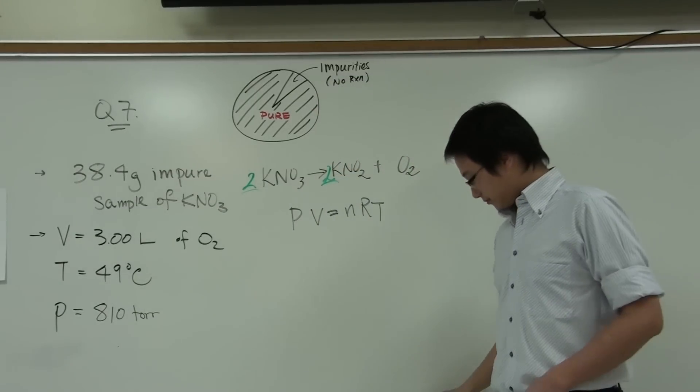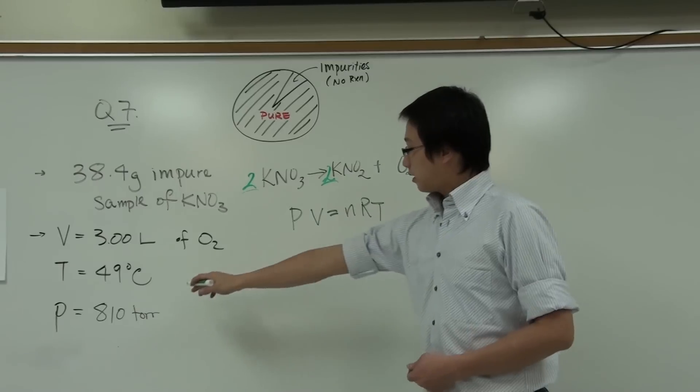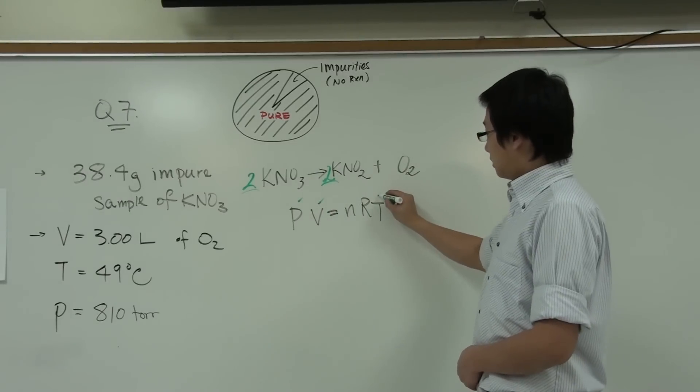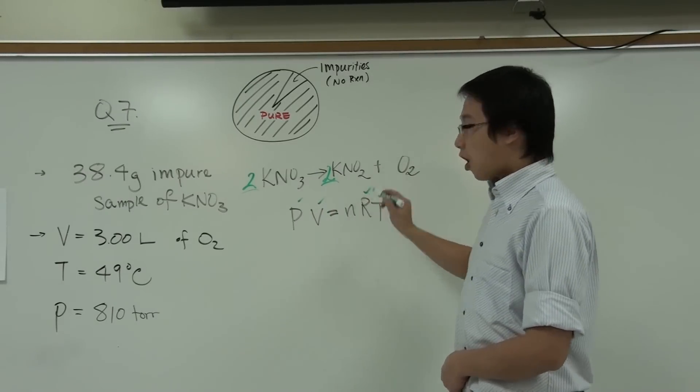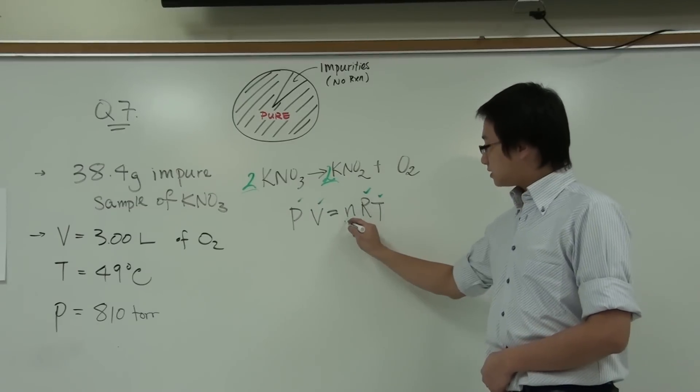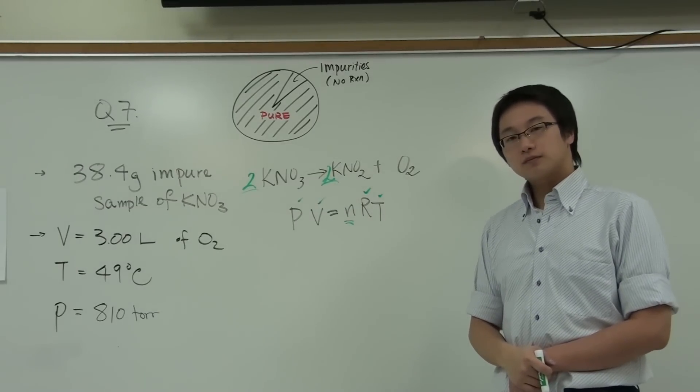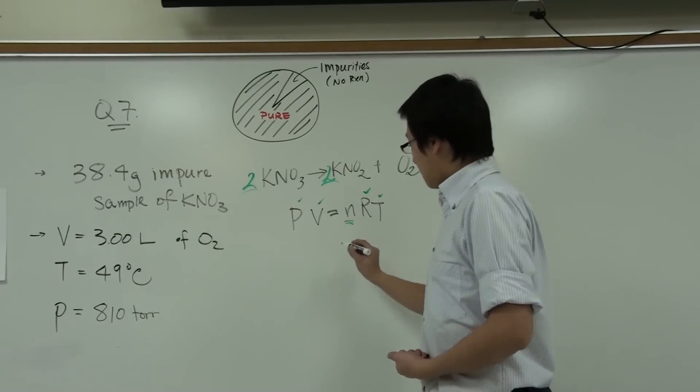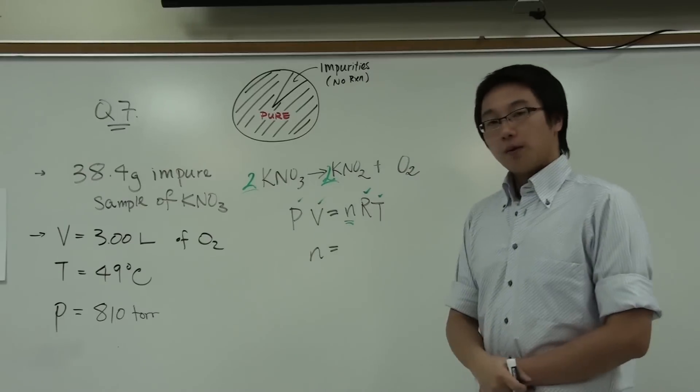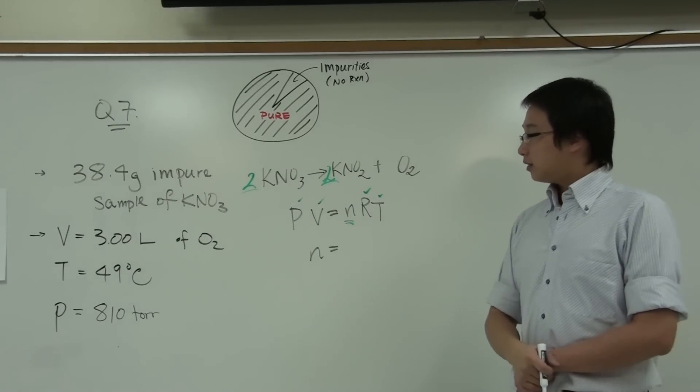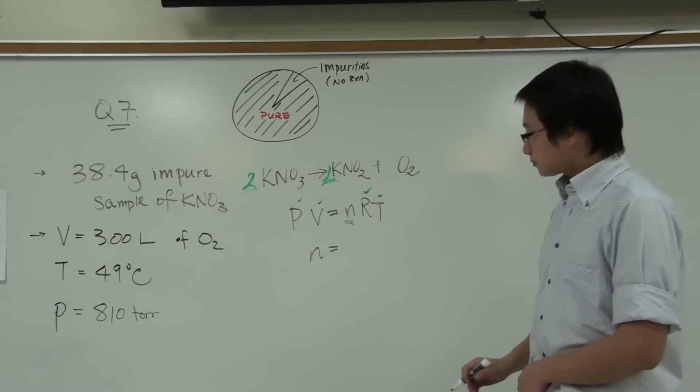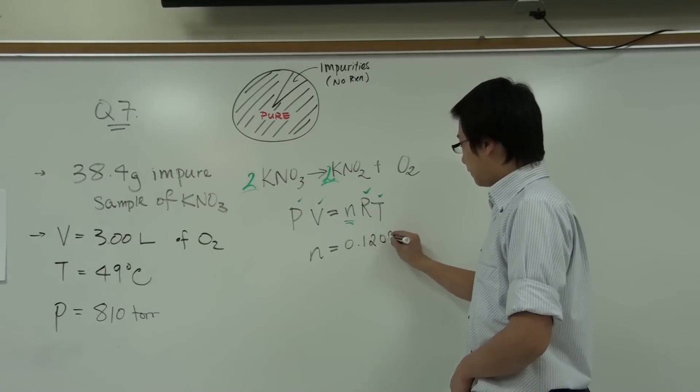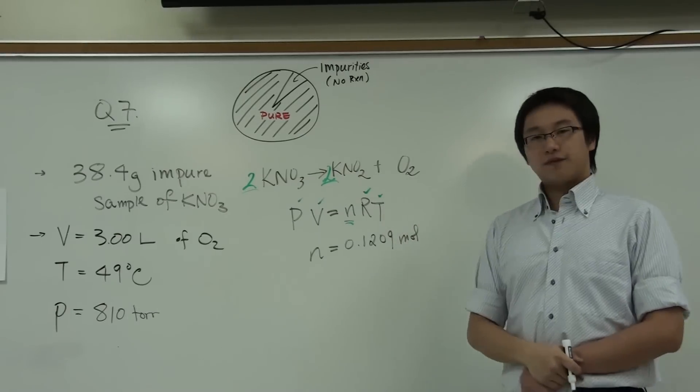To find out the moles of oxygen, because we are given the pressure, we are given the volume, we are given the temperature, and we know what R is. So the only thing that's left is the number of moles. And by putting in those numbers, I'm not going to show the calculations right here. But after you put in those numbers, you should find out that the number of moles of oxygen is going to be 0.1209 moles of oxygen.